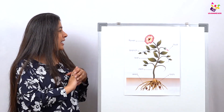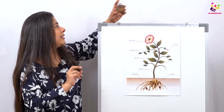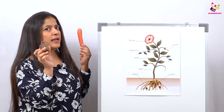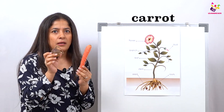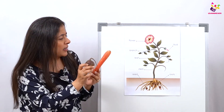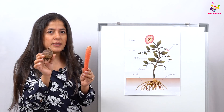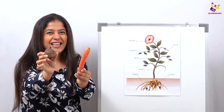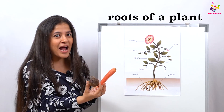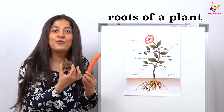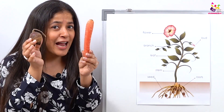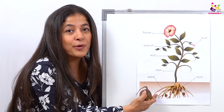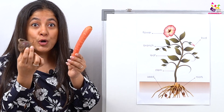Let me see what I have here — that's a beetroot and a carrot! Can you all tell me what part of the plant are these? Think, think, think! Yes, these are the roots of a plant. Carrots and beetroot — they grow underground, so they are the roots of a plant.